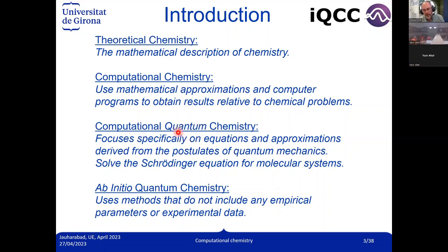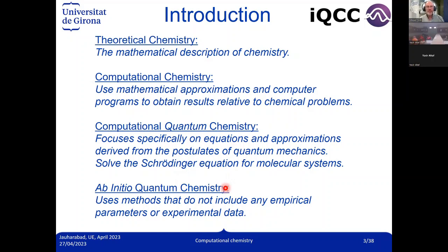A part of computational chemistry is computational quantum chemistry, which uses the Schrödinger equation to understand chemical problems. Within that, there is ab initio quantum chemistry — the part of computational quantum chemistry that does not include any empirical parameters or experimental data. These are the different branches of computational chemistry.